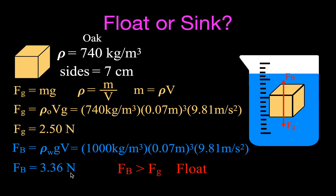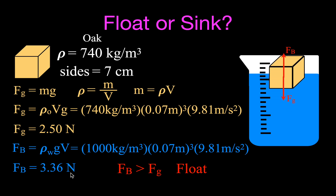The buoyant force of 3.36 newtons is greater than the weight of 2.5 newtons, so the oak will float — it moves up to the surface. When floating, the displaced volume will be less than the full cube volume, resulting in the buoyant force equaling the weight, since the floating cube is in equilibrium and not moving up or down. We'll show how to calculate that in the next video.